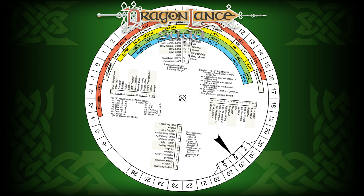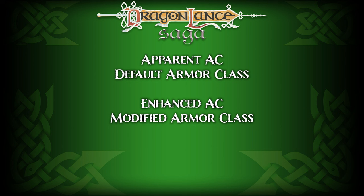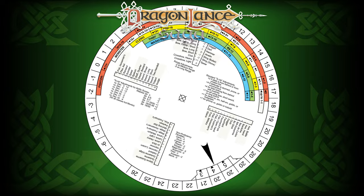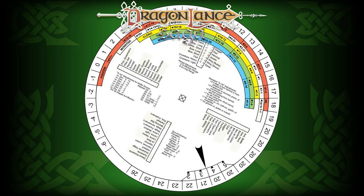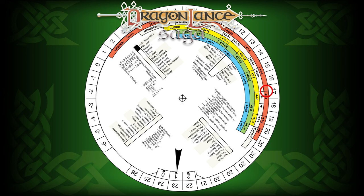This leads to the inevitable discussion about apparent versus enhanced armor classes. This applies to armor with magical bonuses applied to them, like plus three chainmail. Apparent armor class is the natural armor class for the type of armor, falling between two and ten. Enhanced armor class is altered by dexterity, magic items, magic spells, and physical condition. To discover the to-hit number with an enhanced armor class, line up the plate with the apparent armor class, note the weapon adjustment, then slide to the enhanced number, note the class level brake line, and apply the weapon modifier.